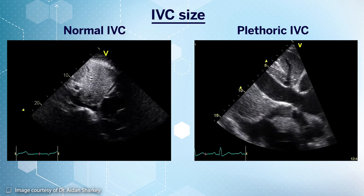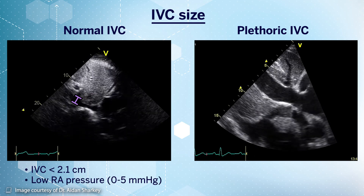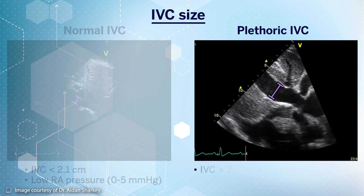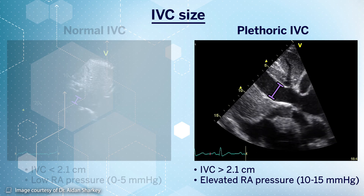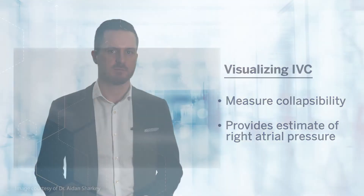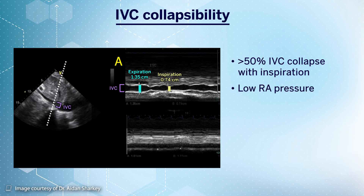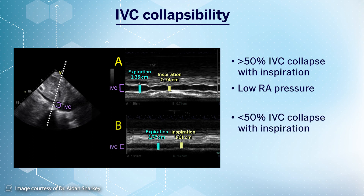When looking at the inferior vena cava, one aspect we evaluate is its size. The normal IVC diameter in spontaneously breathing patients is less than 2.1 centimeters, which indicates low right atrial pressures and suggests the patient would tolerate intravenous fluid administration, as seen in the video loop on the left. Conversely, an IVC diameter greater than 2.1 centimeters indicates elevated right atrial pressures, and this patient may not benefit from further fluid administration, as shown in the video loop on the right. We also examine IVC collapsibility throughout the respiratory cycle. In spontaneously breathing patients, greater than 50% collapsibility with inspiration as seen in image A suggests low right atrial pressure, whereas collapsibility of less than 50% as seen in image B suggests elevated right atrial pressures.